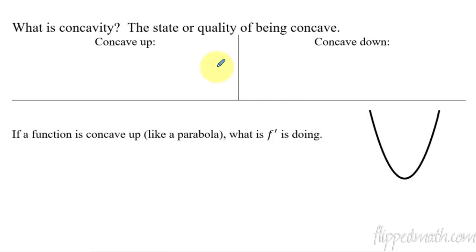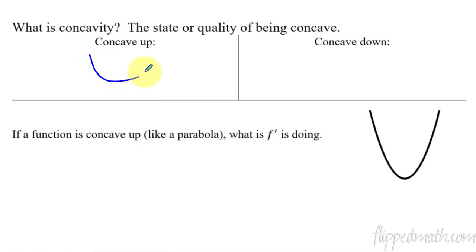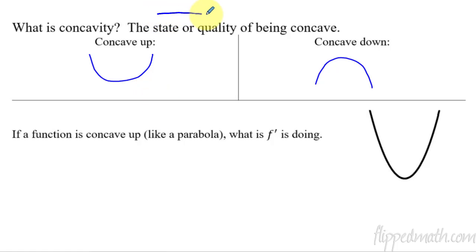So I looked up a quick definition and it said, 'the state or quality of being concave.' And I really hate it when the definition of a word uses the word inside that definition. So let me just make this very clear. If you think about contacts that you put in your eye — concave up would look like this, and concave down would be something opening down, or in this case opening up. So that's concave up. If you had a straight line going across, okay I can't draw a very straight line.